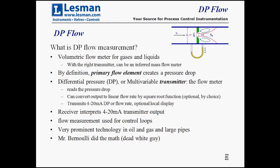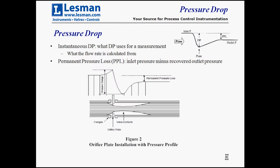It's all based upon math done by Bernoulli centuries ago. There are two pressure drops you have to be concerned with. The instantaneous DP is what's actually used for calculating the flow rate—on this diagram, that's from the inlet pressure down to the very bottom. But after the fluid flows through the primary flow element, which is the orifice plate shown here, it recovers some of that pressure drop, and we have a PPL or permanent pressure loss, which is the inlet pressure minus the recovered outlet pressure.